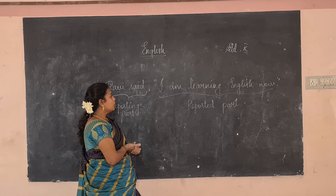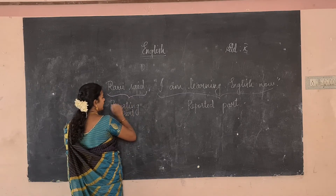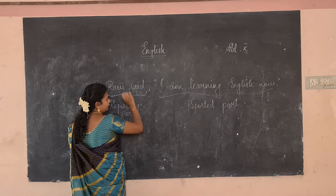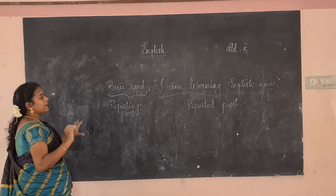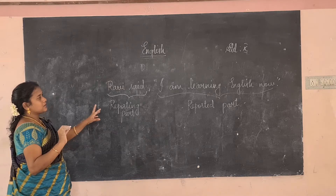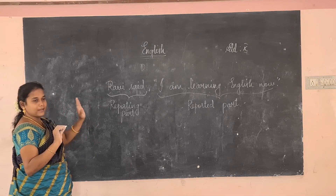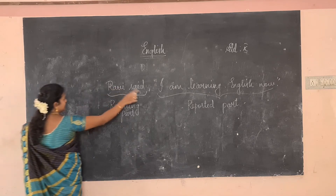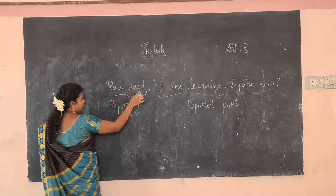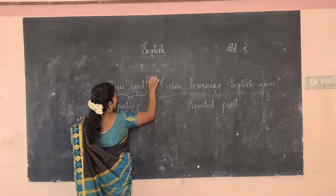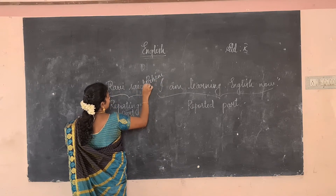We have to change the reported part. If there is no speaker or listener, there won't be any changes. If both speaker and listener are present — for example, 'Ravi said to Rahim' — 'said to' changes to 'told'. Note: we do not write 'told to'; the whole phrase 'said to' changes to 'told'. Then: Ravi told Rahim that — we join both sentences using the conjunction 'that'.